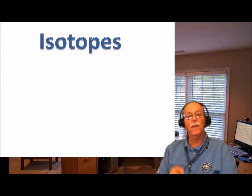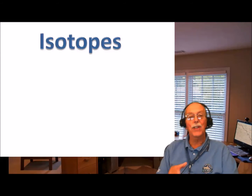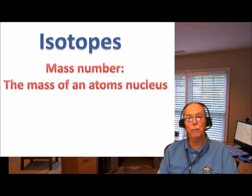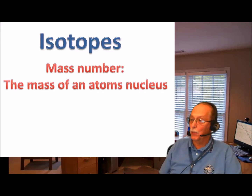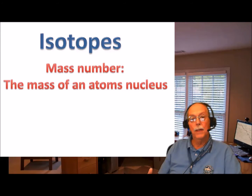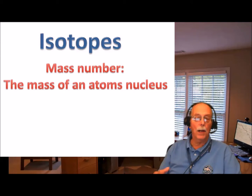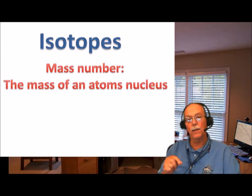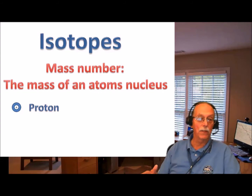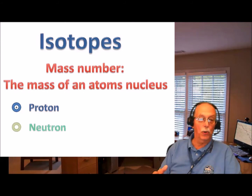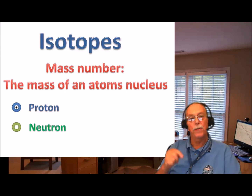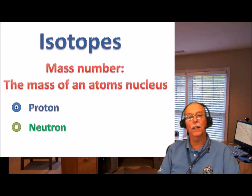The best place to start if you're going to understand what an isotope is, is to understand mass number. What is mass number? Mass number is simply the mass of an atom's nucleus. Mass number depends on a couple of particles — the only particles found in the nucleus of the atom — and those are protons, which have a positive charge, and neutrons. They both have a mass of one.